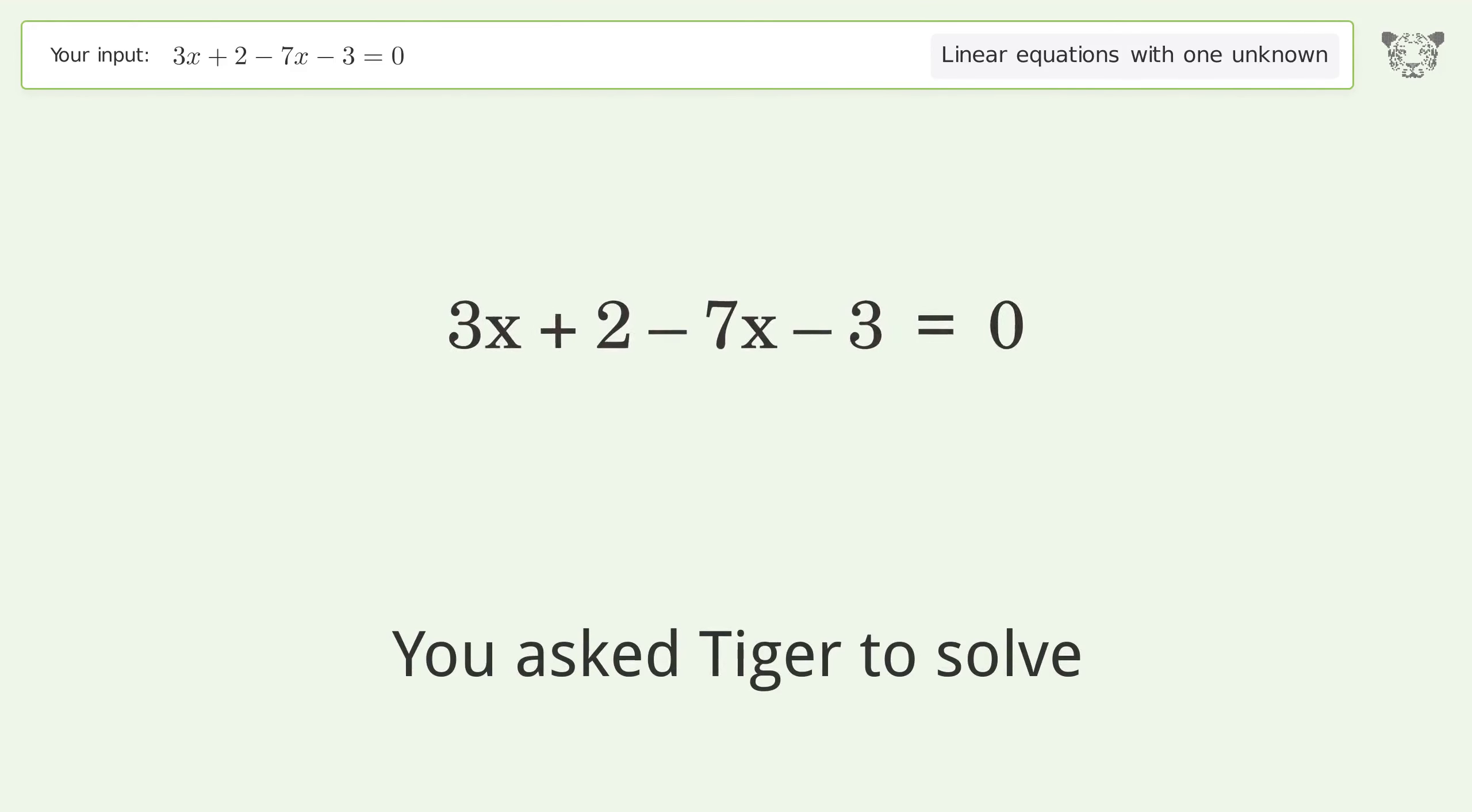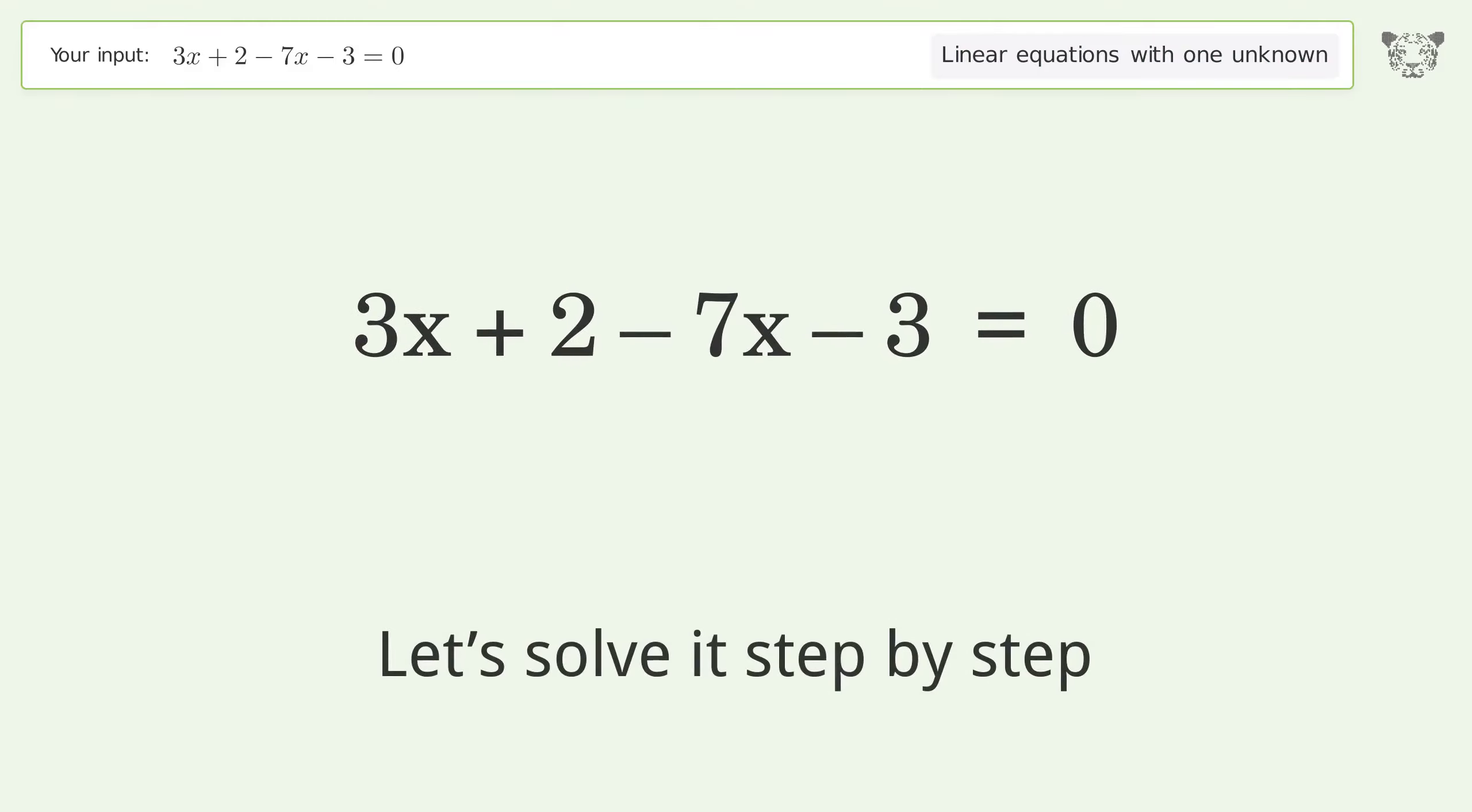You asked Tiger to solve this. This deals with linear equations with one unknown. The final result is x equals negative 1 over 4. Let's solve it step by step.